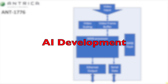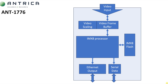Today I wanted to explain how we integrate artificial intelligence with our range of UAV miniature video encoders and decoders. On the screen I'm showing you the basic block diagram of the new ANT1776. This is a H.264 and H.265 video encoder. As you can see at the top, we have a variety of video inputs added into a video frame buffer, and then we use an IMX8 to encode these into either H.264 or H.265.